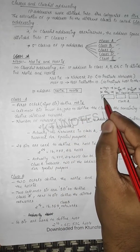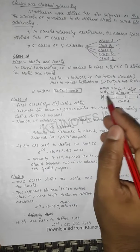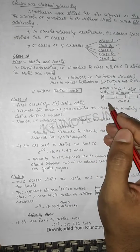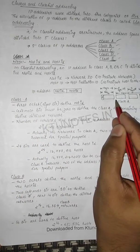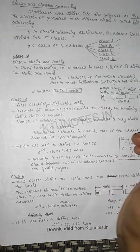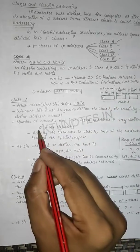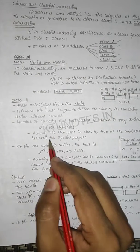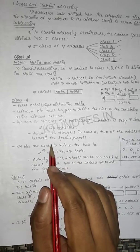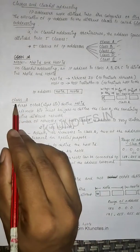In Class A, the leftmost bit is 0, and the remaining 7 bits define different networks — 2 raised to 7 equals 128 possible networks. However, only 126 networks are usable because the first and last networks are reserved for special purposes. So 126 networks are available in Class A.